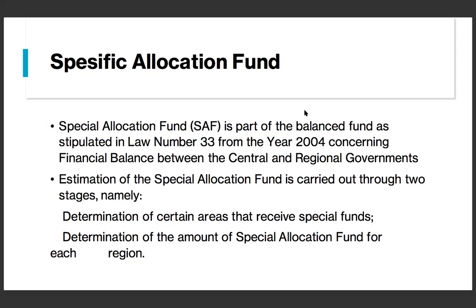Certain regions that meet the criteria are assigned each year to obtain the Special Allocation Fund. The sectors covered include public services, security, economy, environment, housing and public facilities, health, and also tourism. The areas that can receive this fund must meet general, specific, and technical criteria as proposed in the program.